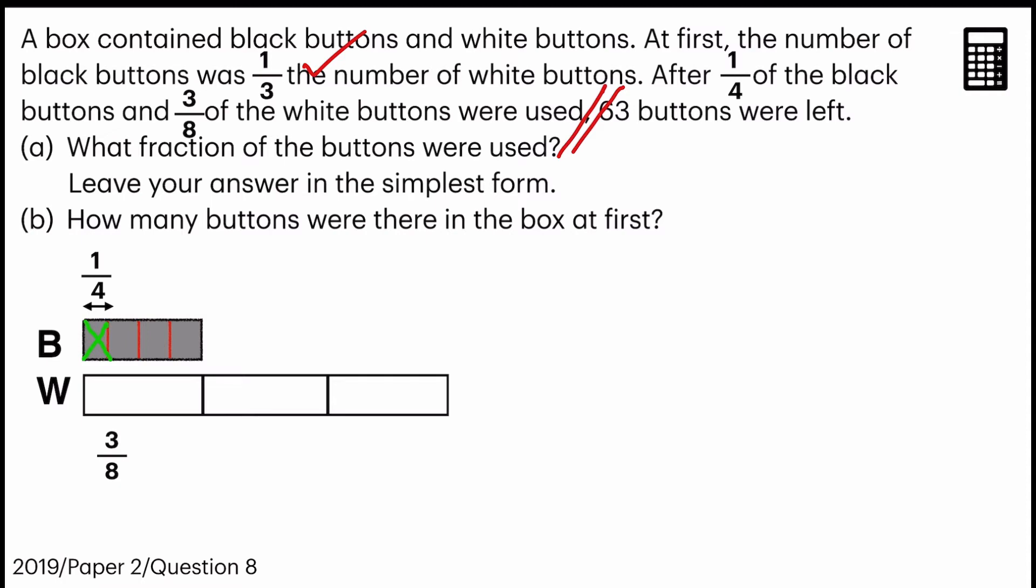But it is not out of eight, as you can see in the model. So we're gonna change it to a common multiple, which is 24. How did we get that? We'll multiply by three and multiply by three. Which means that in every white portion unit, there are eight units. So let's count.